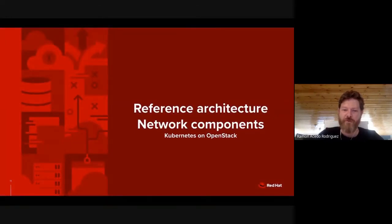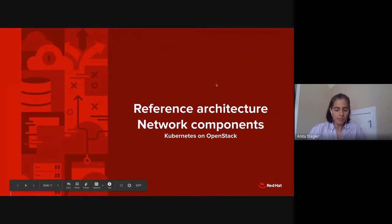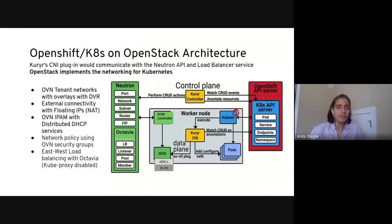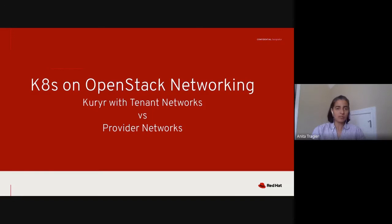Thanks Ramon. I'll be covering Kubernetes and OpenStack architecture with Kuryr. In this example, OpenStack implements the networking for Kubernetes. The use case we've taken is with OVN as the SDN option. OVN is handling tenant networking with overlays and DVR. External connectivity is supported with floating IPs using NAT. OVN provides distributed DHCP services, network policy using OVN security groups, and east-west load balancing with OpenStack's Octavia solution. KubeProxy is disabled in this use case.